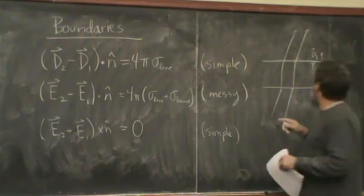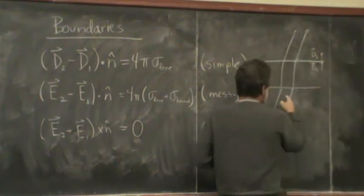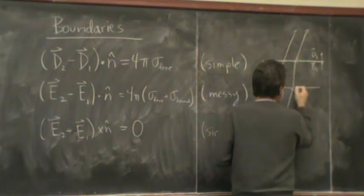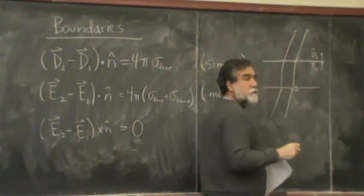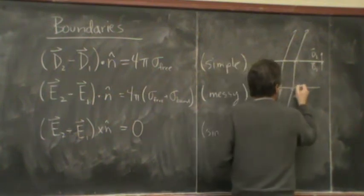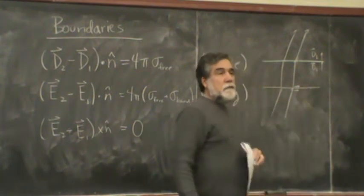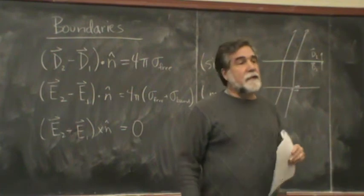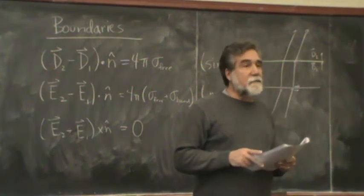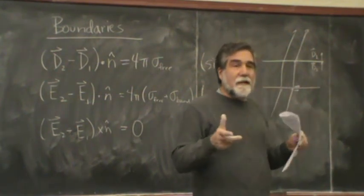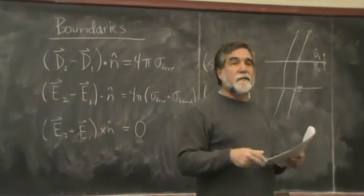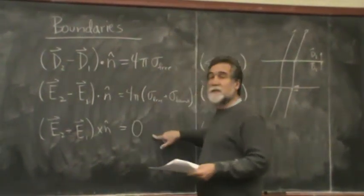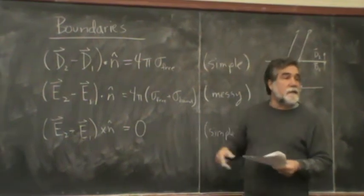And the component of the electric field along the surface is going to be matched. So I actually misdrew that a little bit. But I just want to get you the idea that the electric field inside isn't the same as the electric field outside. And I can figure out what the relationships are by using these boundary conditions.